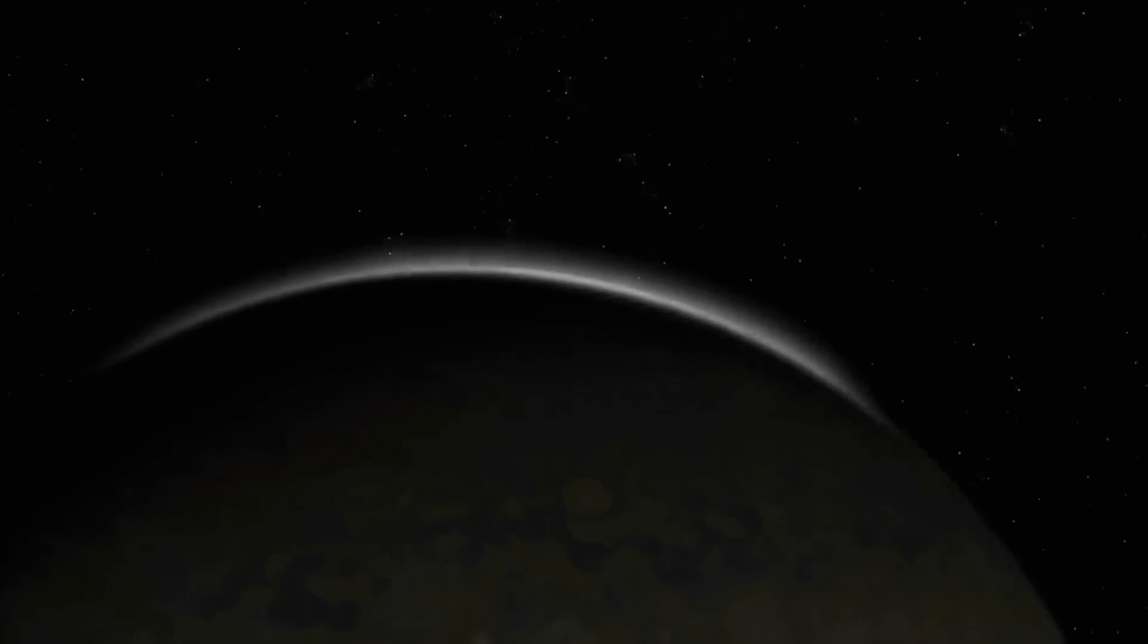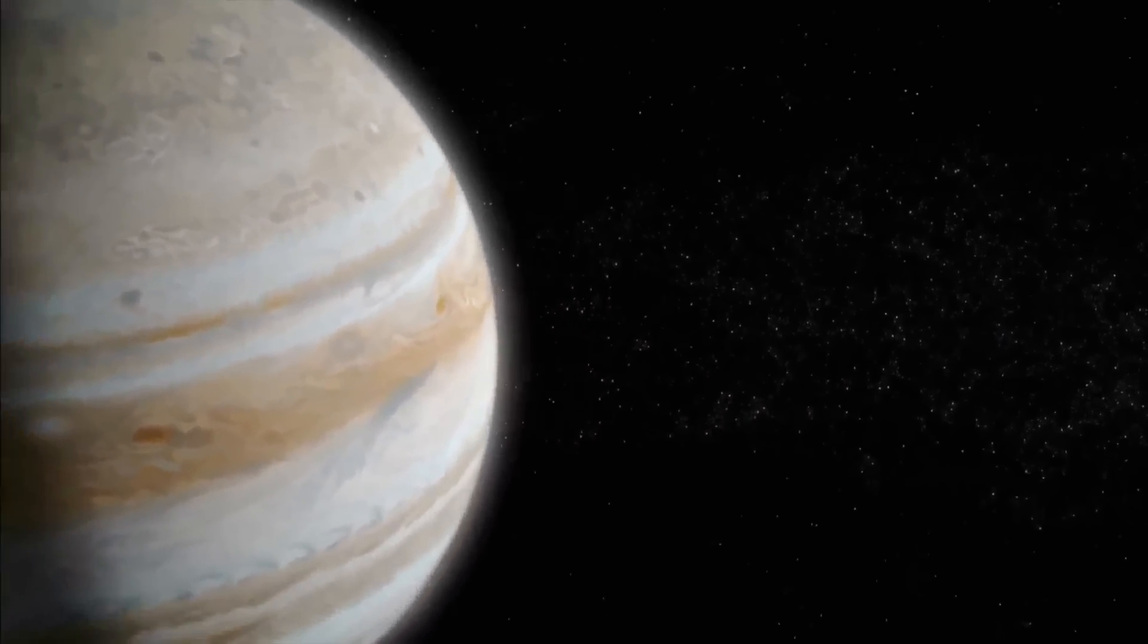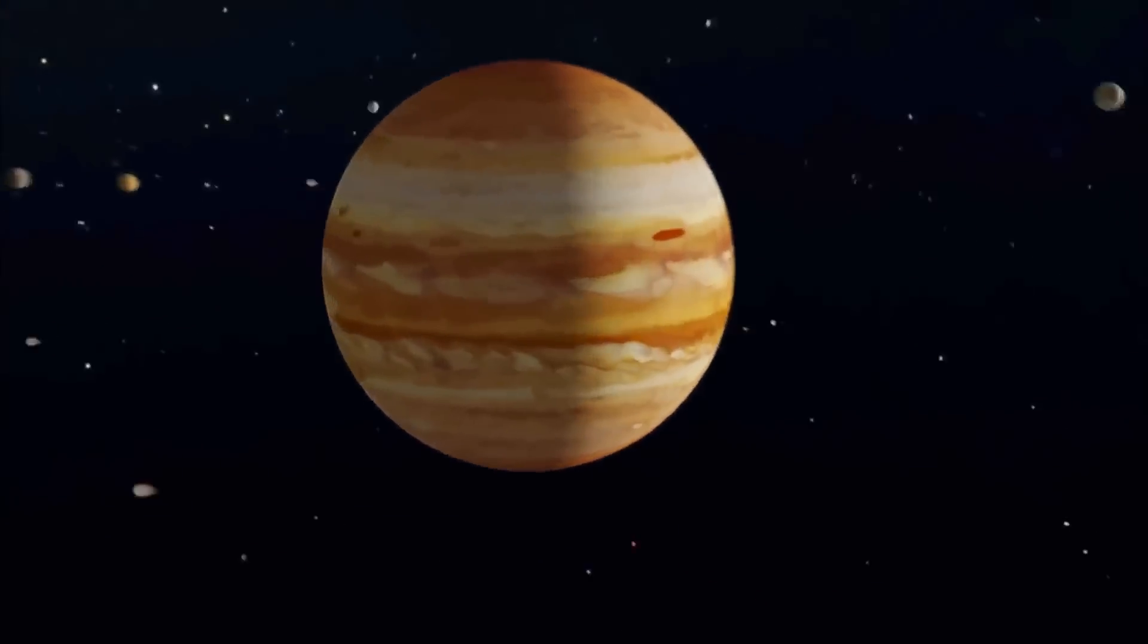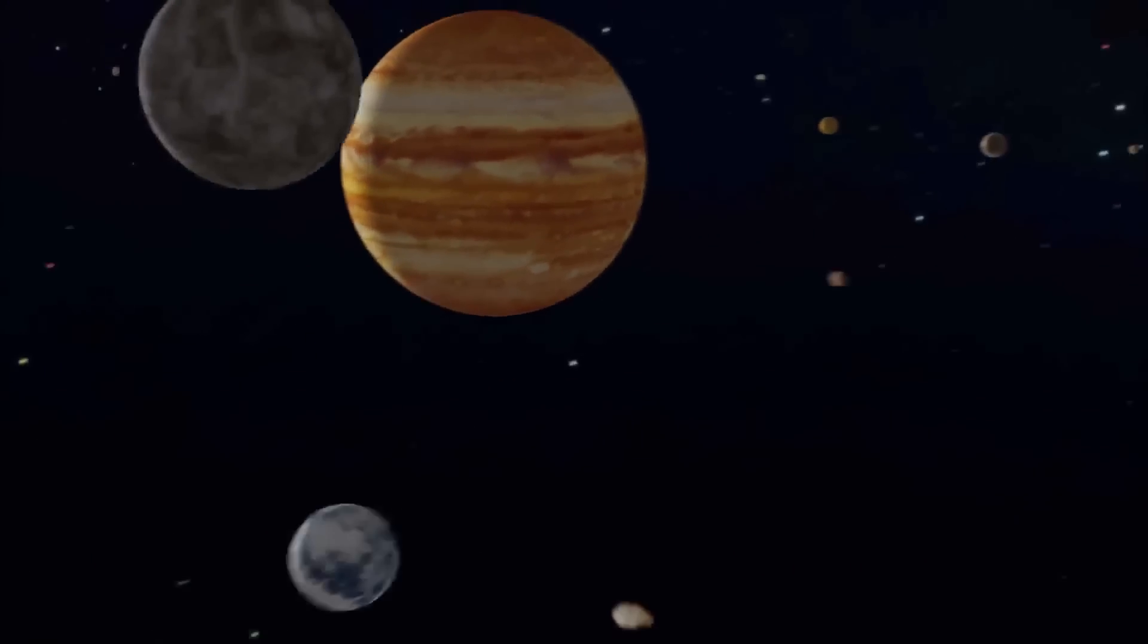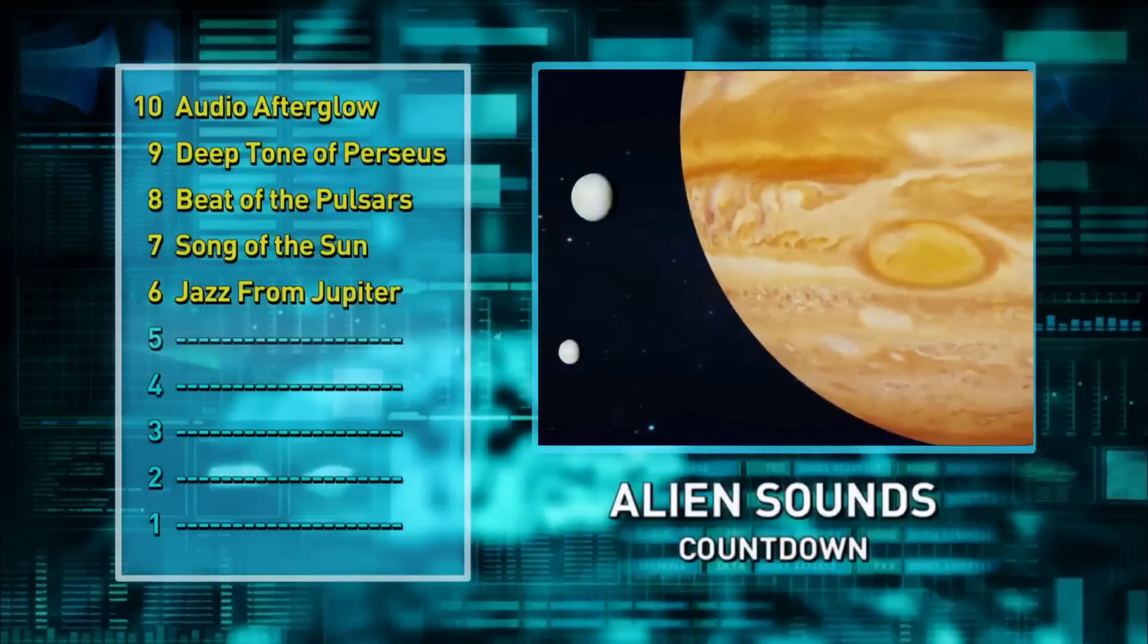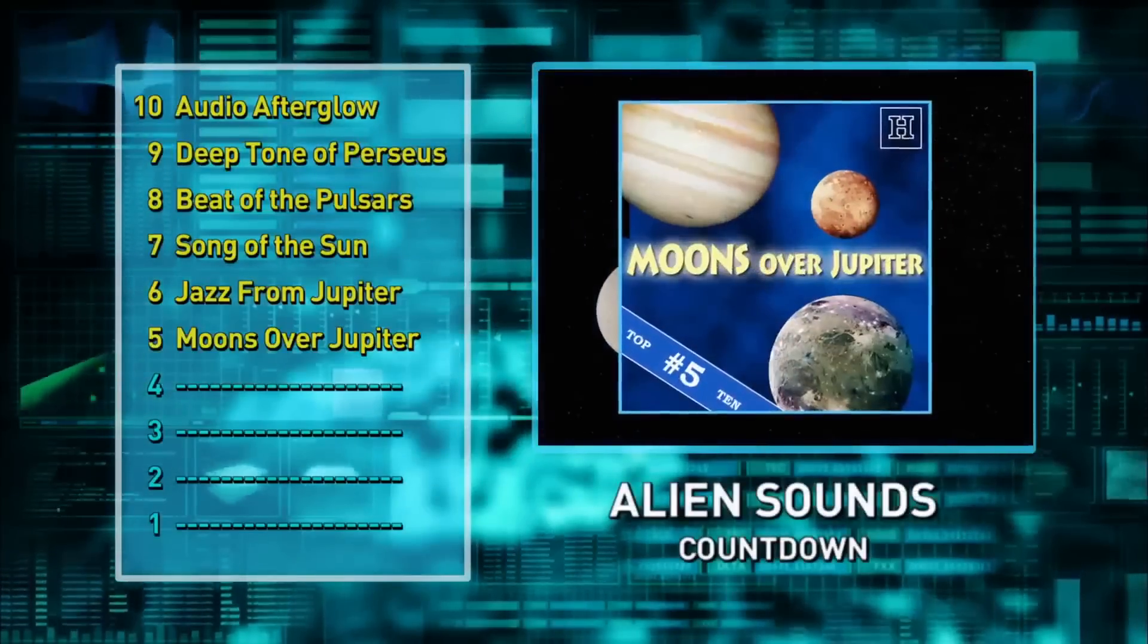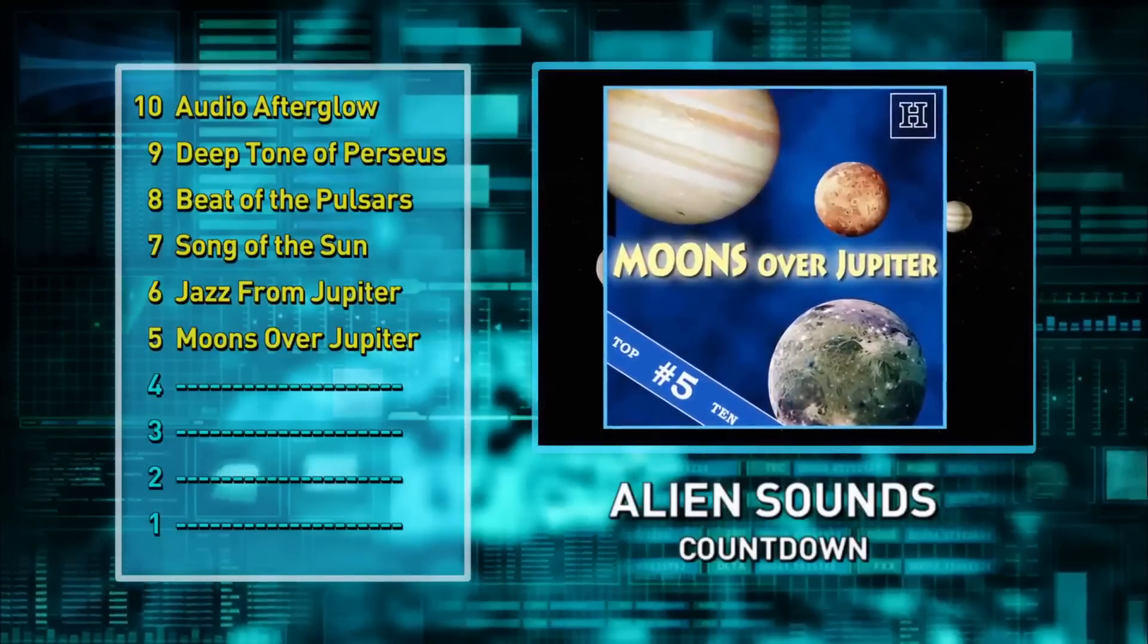The top 10 countdown in the alien sounds of the universe has reached Jupiter, sending out its own brand of space music. But the next hit is no solo. Jupiter has a backup group. They're the Jovian moons circling the giant planet. And now they have their own album. It places at number five in the top 10. And the tune is called Moons Over Jupiter.